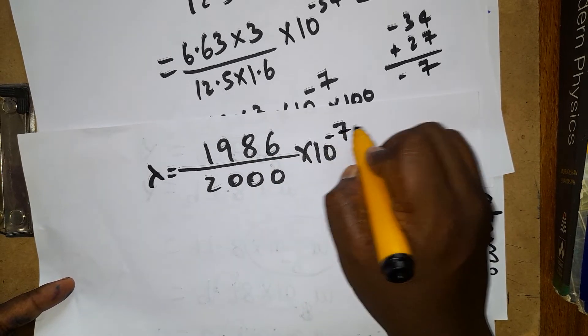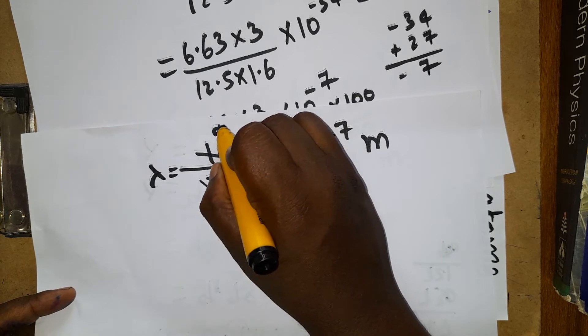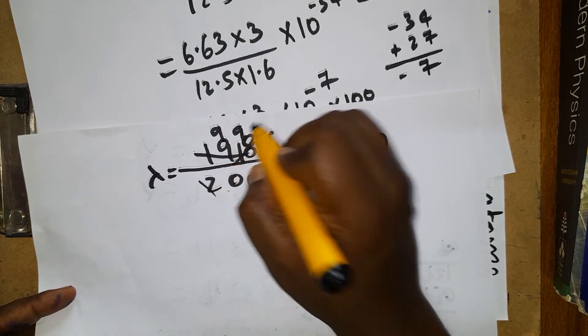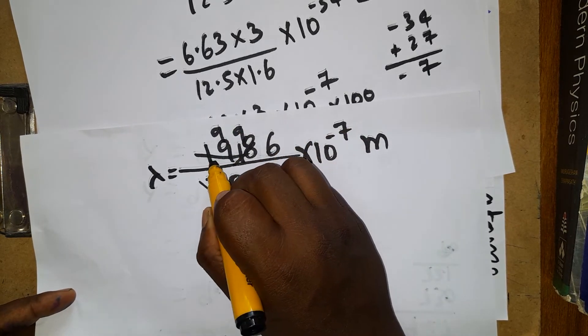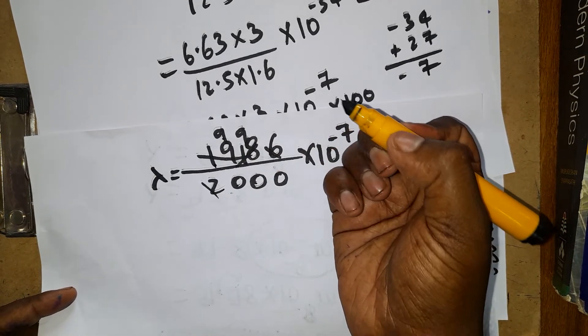The multiplication of these two will give us 2000 in the denominator. Numerator 663 into 3, approximately the answer is going to give us 1986 into 10 power minus 7 meter.